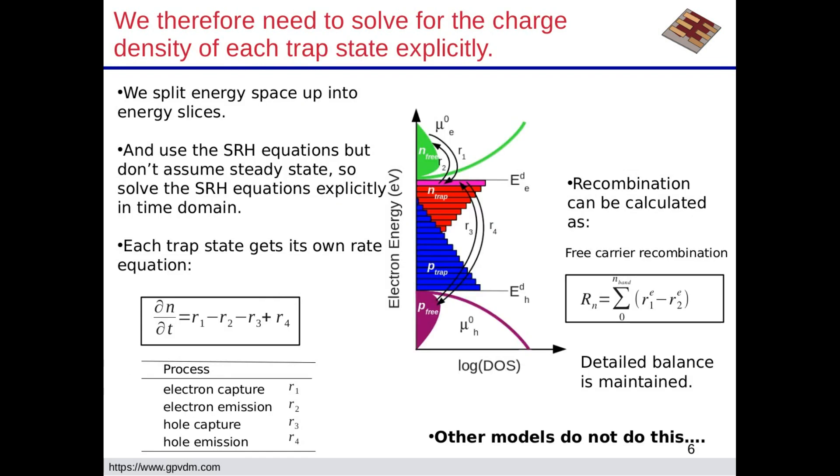So the approach I took with GPVDM is instead of arriving at this equation analytically, I stopped before you derive that equation. And I said, okay, let's have a rate equation in each. So on the right, this picture here, we've got the green is the conduction band, basically, the purple are the holes. And then the blue is the exponential tail of trapped states, so trapped holes, and the red is the exponential tail of electron states.